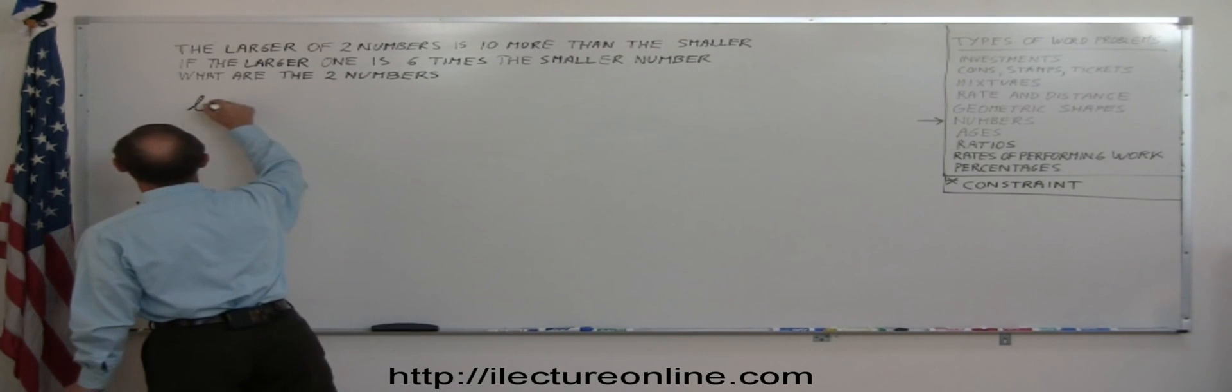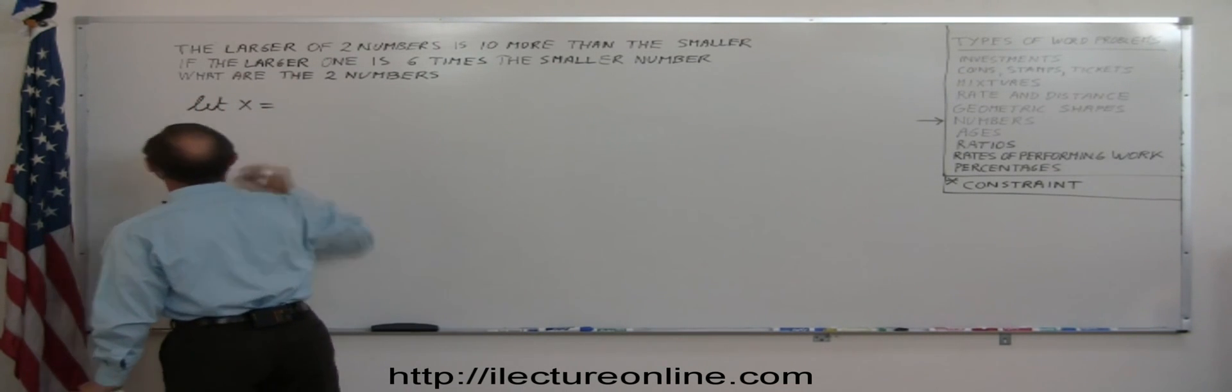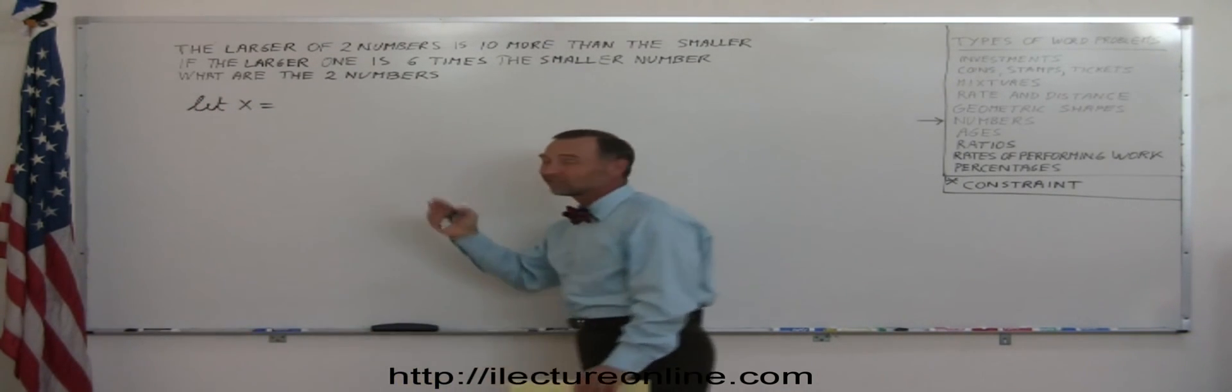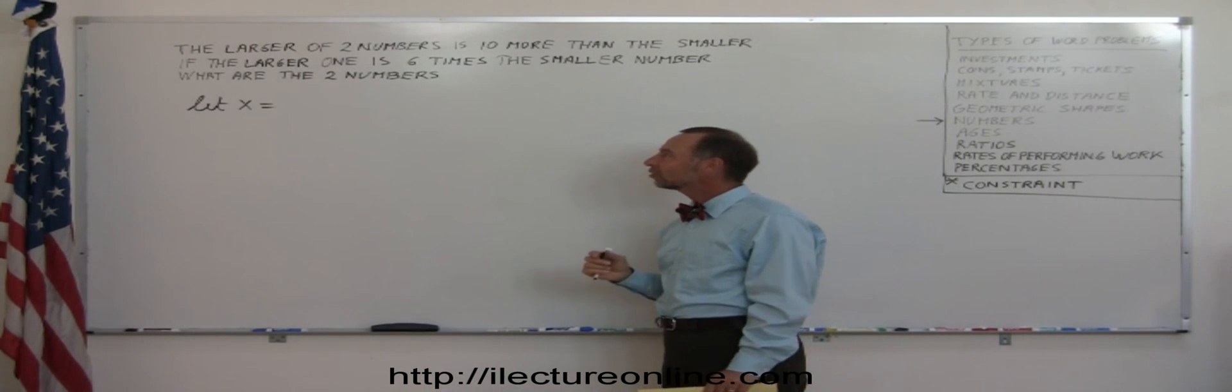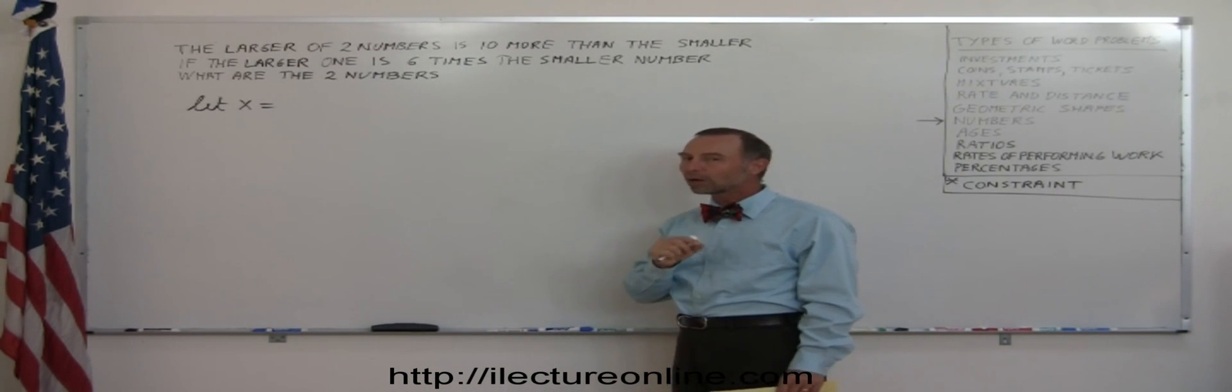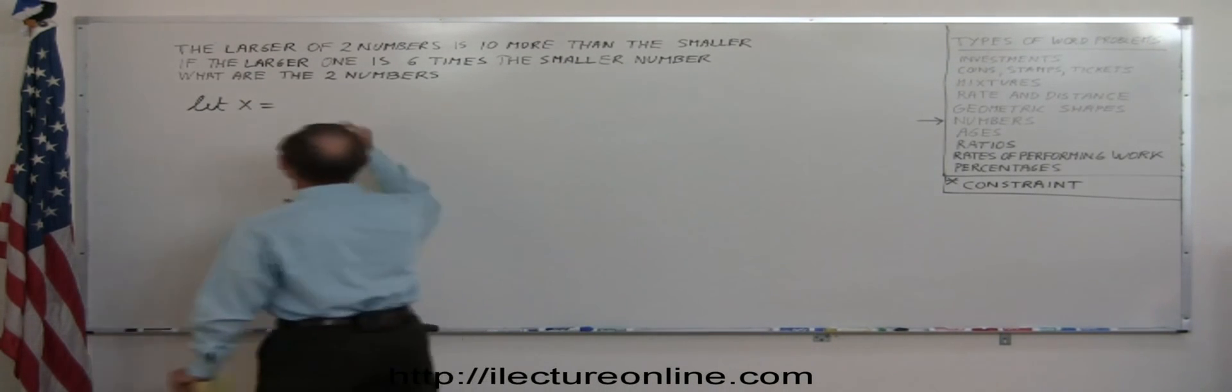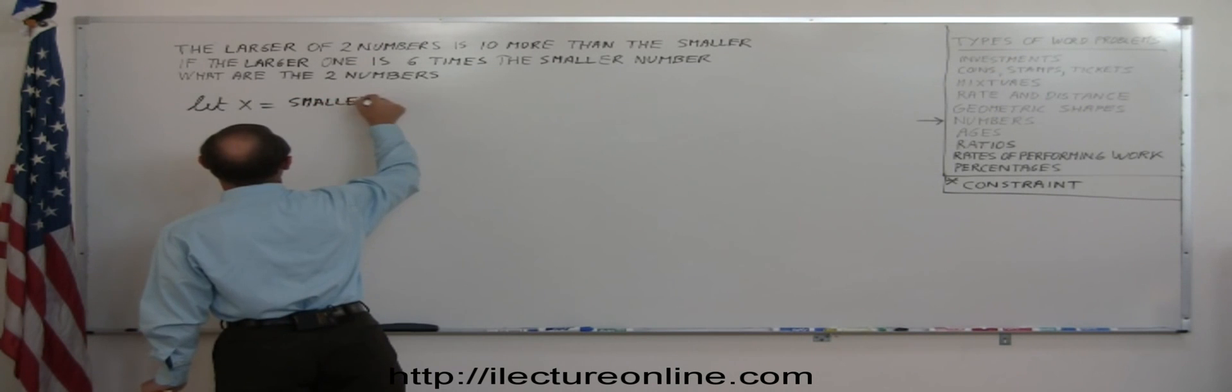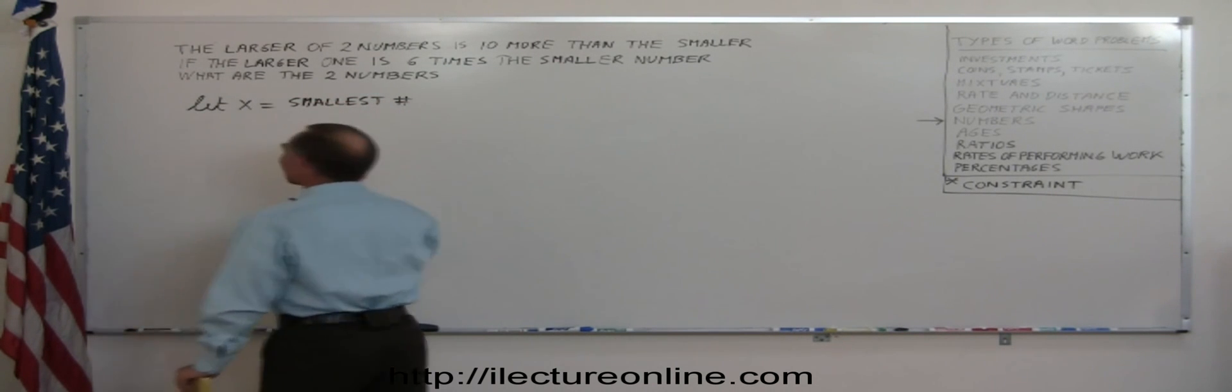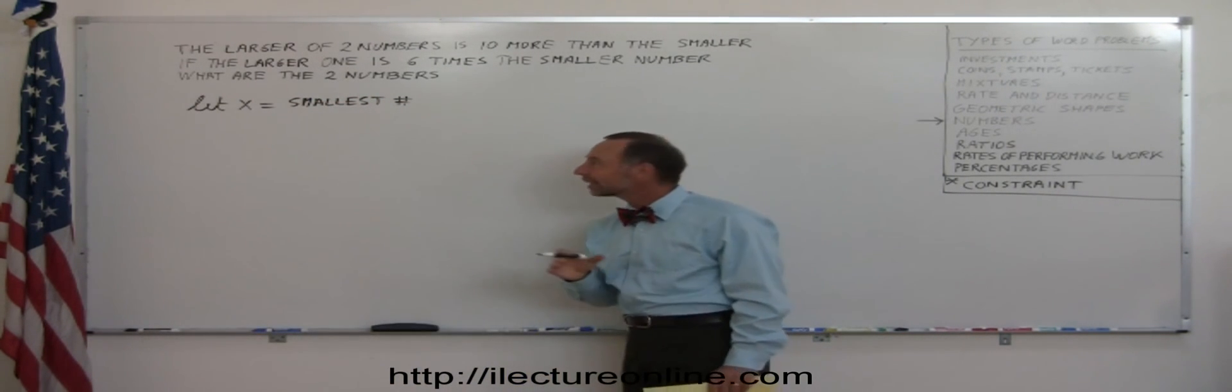So you write down let x equal, and since there's only two numbers, you want to let x equal one of the two numbers. It's usually a good idea to let x equal the smallest number. So in this case, we're going to let x equal the smallest of the two numbers. And yes, it is a good idea to write out exactly what you let x represent.